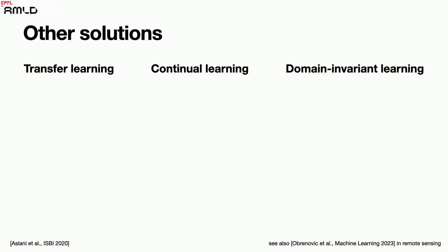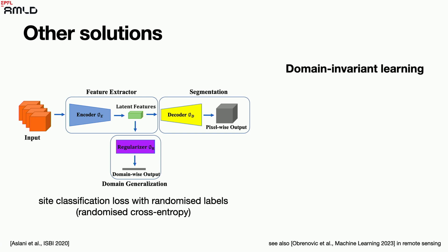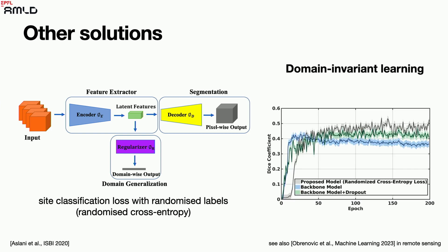There are other solutions of course. You could do transfer learning — train on one hospital and fine-tune on another — which tends to solve the problem. You could do continual learning, which is now being rolled out by vendors and even has FDA regulation: the software-as-a-medical-device framework now has a provision for continually updating algorithms. Or you could do domain invariant learning, where your algorithm doesn't care where the data comes from. One example adds a loss term that randomizes hospital labels, so the features learned for segmentation become independent of the hospital — a simple idea that tends to work well.